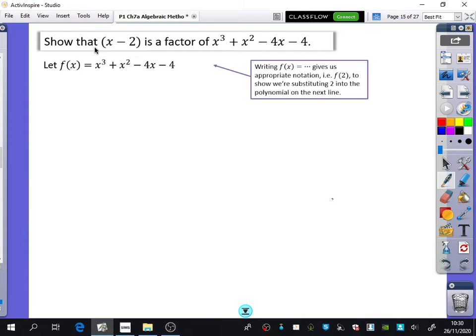Now, because this is a factor of this thing that I've got here, I can say that f of 2 would be equal to 2 cubed plus 2 squared minus 4 times 2 minus 4. Well, that's 8 plus 4 minus 8 minus 4, which is equal to 0.